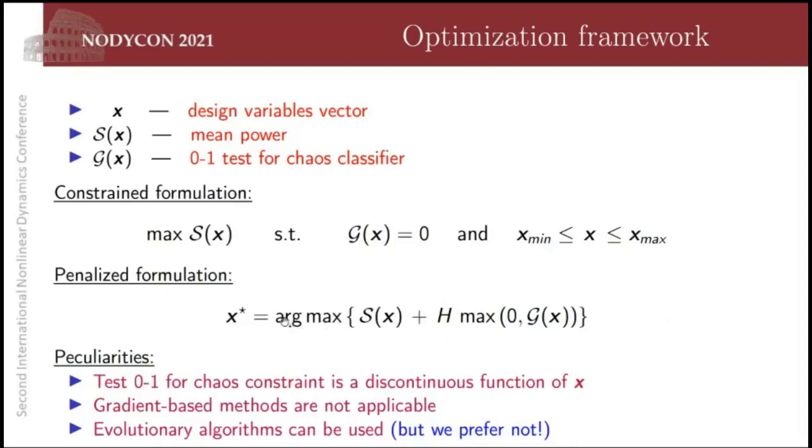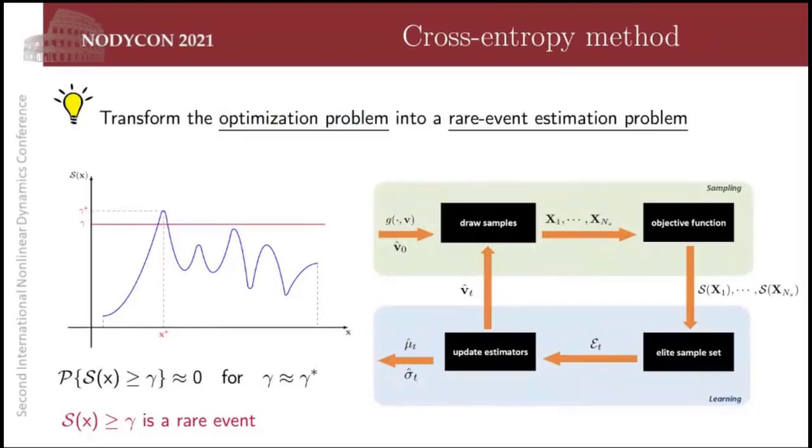But I will bring your attention to some peculiarities of this problem. Due to the binary nature of the classifier, this problem is a discontinuous function of the design vector, because the zero-one test is binary. So this constraint function has some jumps. It jumps between zero and one all the time. So this is discontinuous, which prevents us from using gradient-based methods. So evolutionary algorithms can be used here, but we don't want to go to classical techniques like genetic algorithm. We prefer to test the cross-entropy method because it's simpler and powerful.